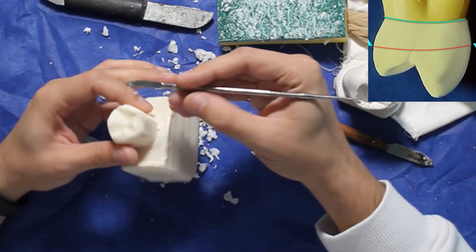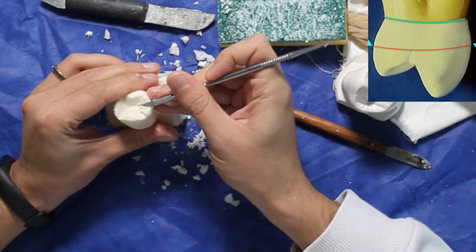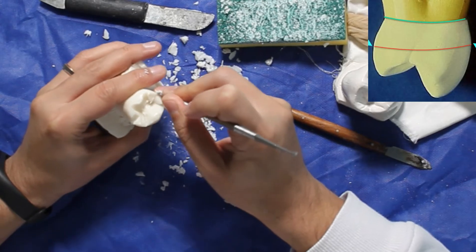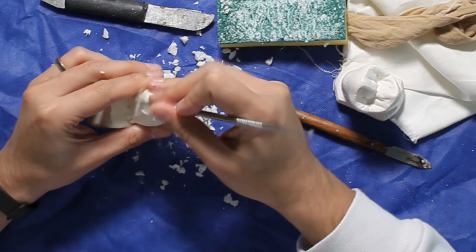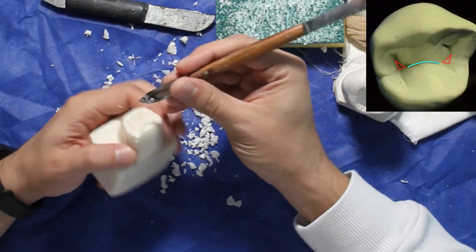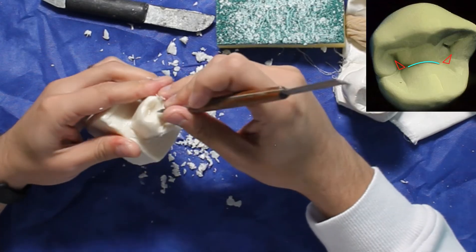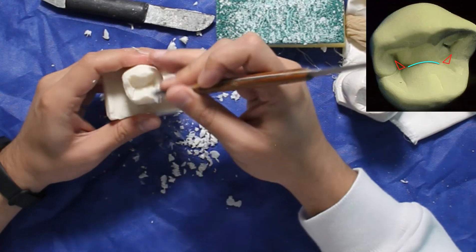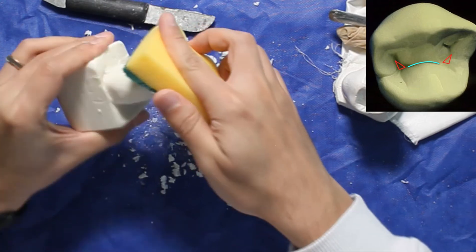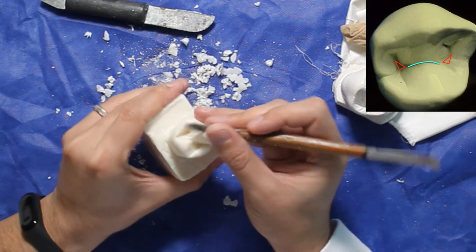Now we will carve this line. You can continue with other wax knife and make deeper fossa here, mesial and distal fossa. We are almost done.